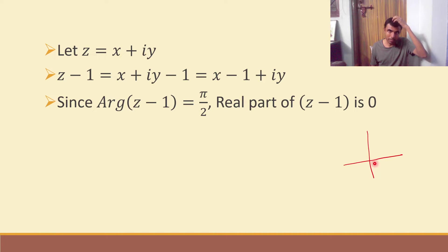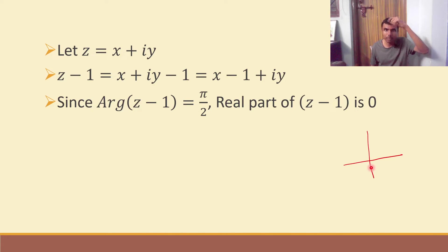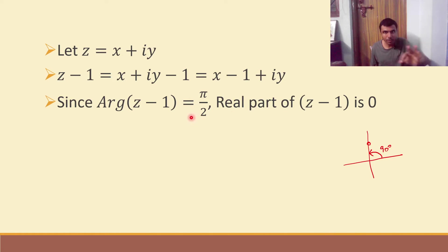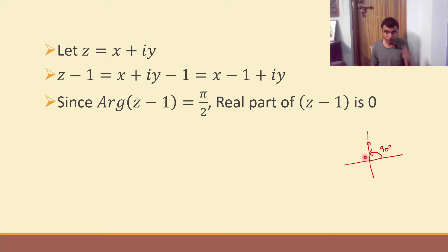Here is a complex number. Argument of z minus 1 is 0 means the line segment makes 0 degrees with the positive x-axis. Argument of z minus 1 is 90 degrees, that is pi by 2. When the argument is pi by 2, our complex number lies on the y-axis. So my point is definitely on the y-axis, because argument is pi by 2.